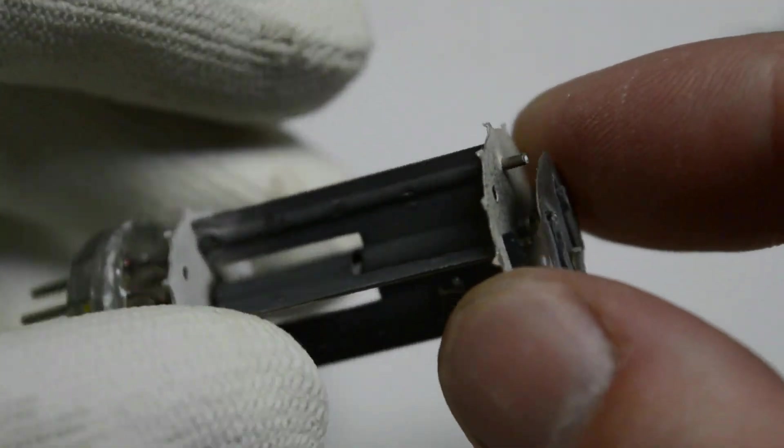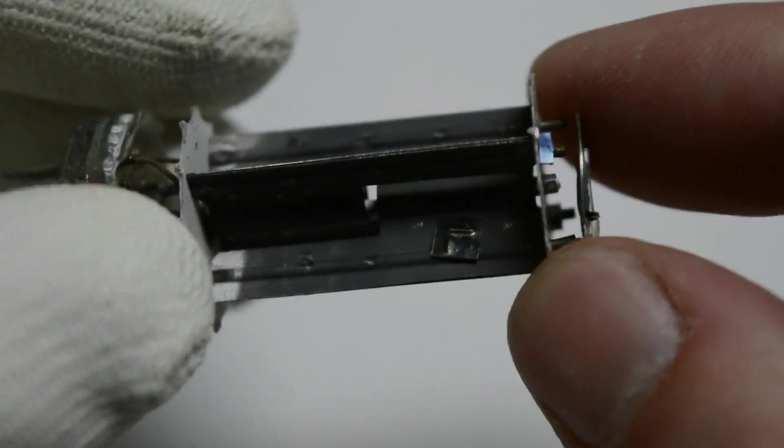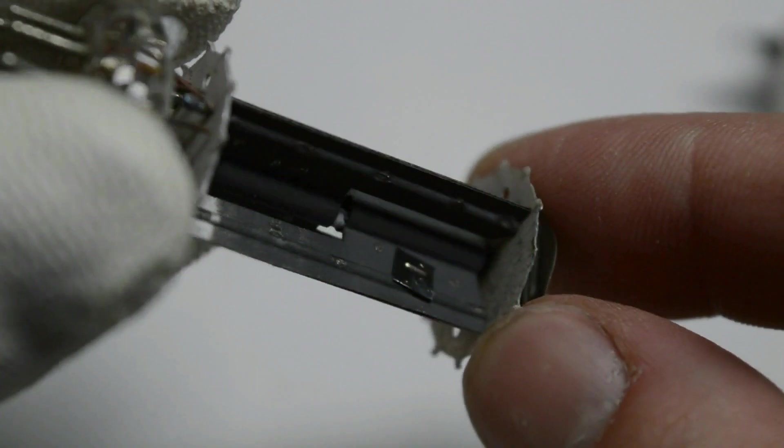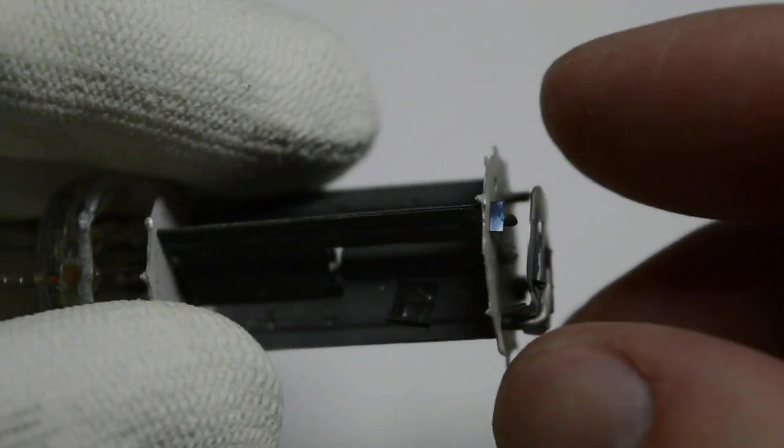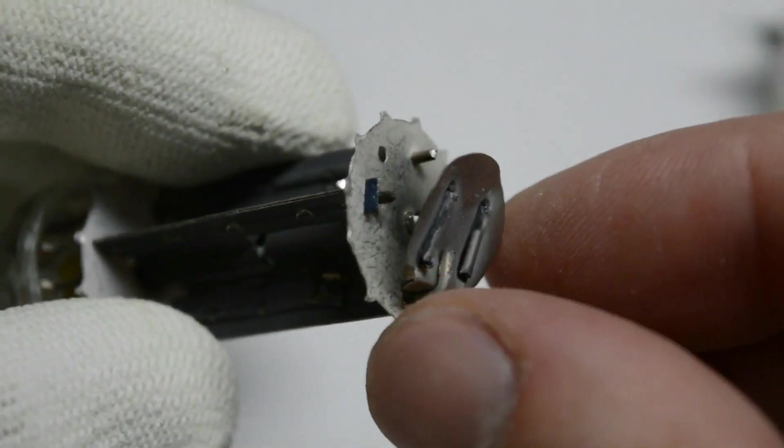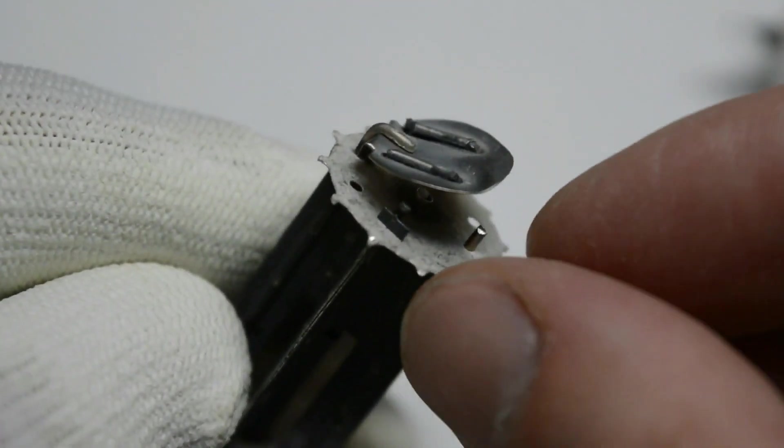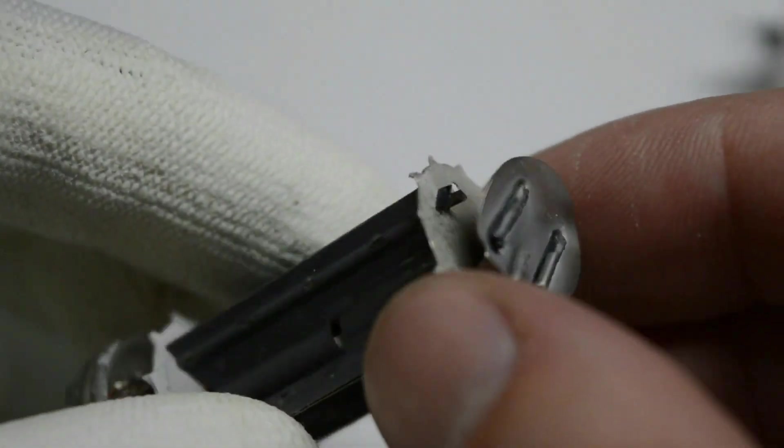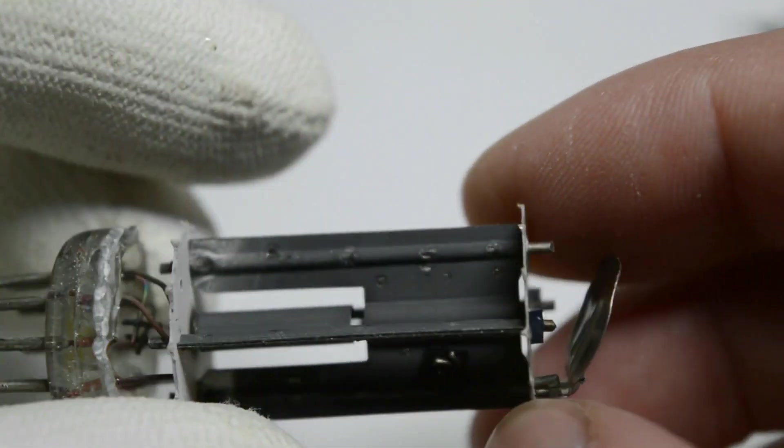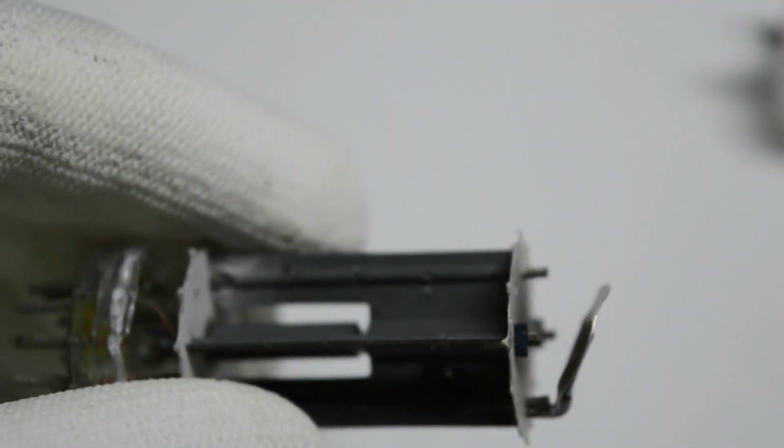So now what I will try to do is remove one of the anodes and try to see exactly how the cathode looks. For that, I think I'll need to remove the getter, maybe cut off some other pieces. And then this upper isolator should come off together with one of the anodes. Let's see how that works.